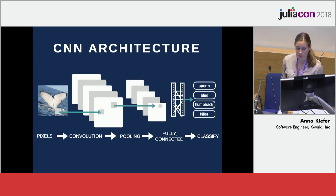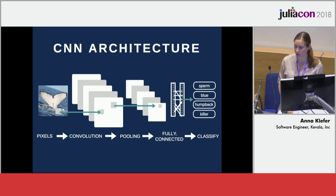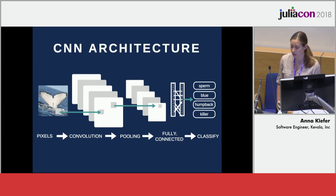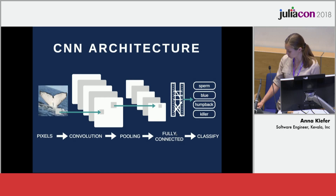A CNN has proved to be a pretty promising approach for images, but it's subject to a number of limitations. Namely, it takes a long time to train, and I need a lot of training data — more than 150 images for each whale. I didn't have high hopes for being able to train one from scratch. I did try training one using Flux from scratch and received about 5% accuracy. So to get over this hurdle, I decided to use a pre-trained CNN, which should help alleviate some of my concerns.